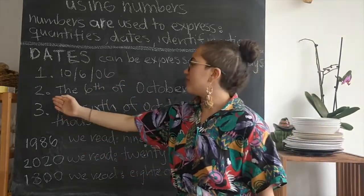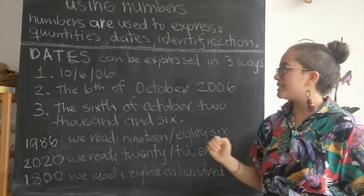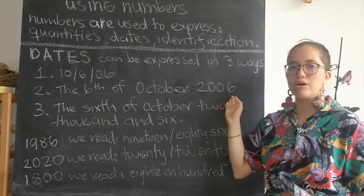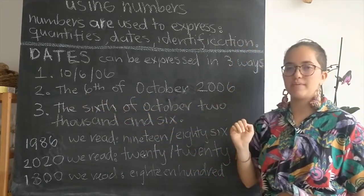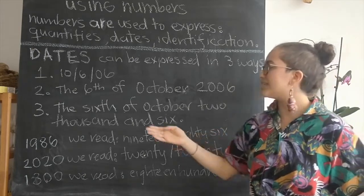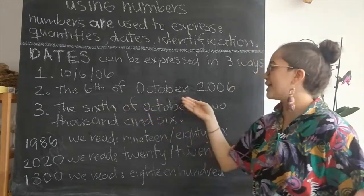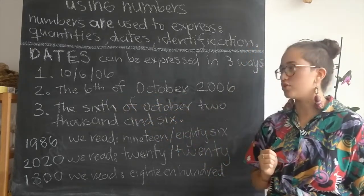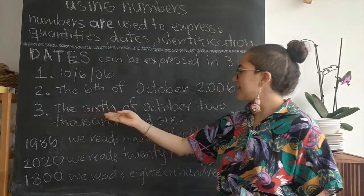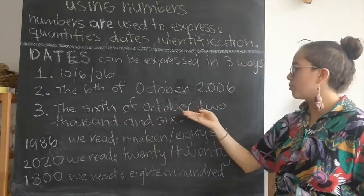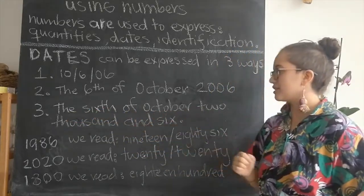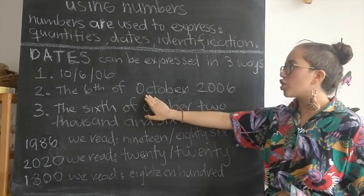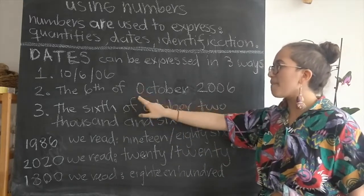The second way to write the date is by saying the 6th of October 2006. And the third way is the same as the second, just replacing the numbers with words. So we would say the 6th of October 2006. Now remember, in English the months go with a capital letter.